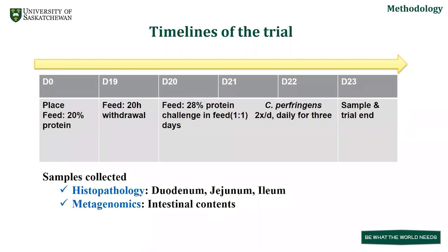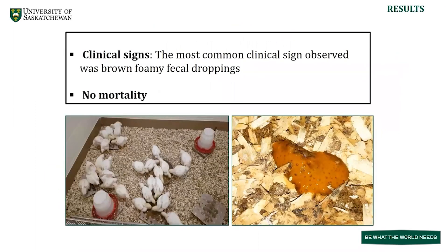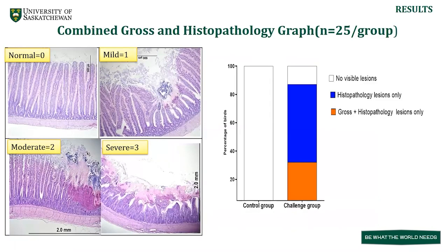Samples were collected for histopathology from the jejunum and ileum, and intestinal contents for metagenomics. The most common clinical sign observed was brown foamy fecal droppings, and there was no mortality observed in either group throughout the trial. We were able to produce necrotic enteritis in challenged birds, with about 86 percent of birds affected as shown in the bar graph. Birds were scored based on necrotic enteritis lesions: normal scored as zero, one or two necrotic foci as one, locally extensive necrosis of villi as two, and diffuse necrosis of the intestine as score three.